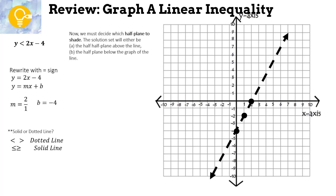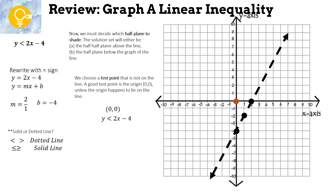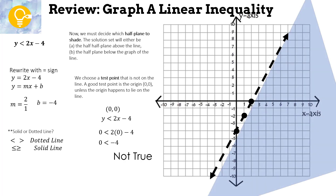Now decide: solid or dotted line? Looking at the original inequality, it's 'less than,' so it's a dotted line. We must decide which half plane to shade. Pick test point (0, 0) — substitute: 0 < 2(0) − 4 → 0 < −4. Is that true? No. So we do not shade the side with (0, 0); we shade the other side.